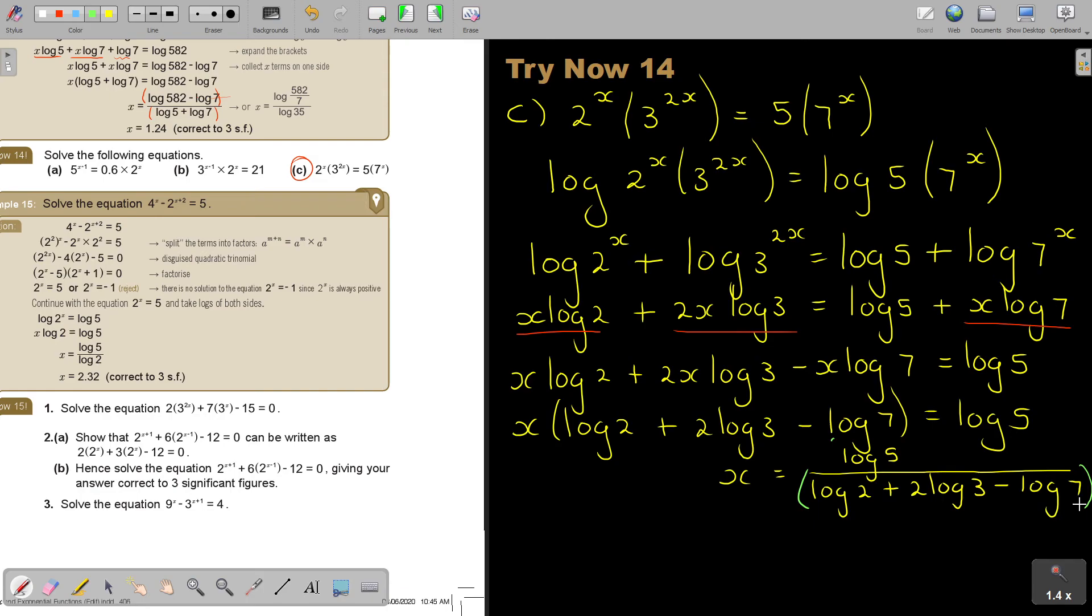Press log 5, divide, bracket, log 2 plus 2 log 3 minus log 7. Close the bracket, equals, and then approximate it to three significant figures. So, it's 1.70. Don't forget that zero because there was a 4, so it stays a zero. And that's correct to three significant figures. And that's the value of x approximated.